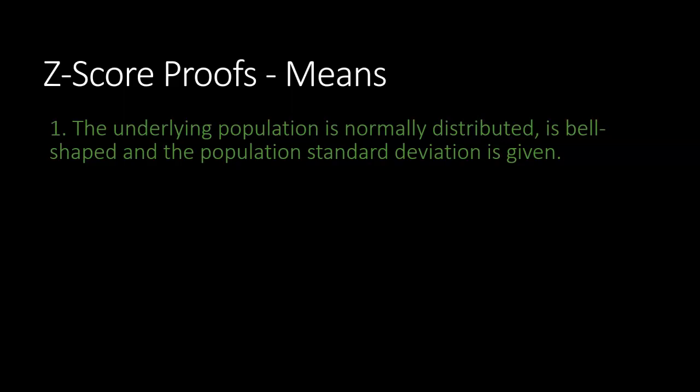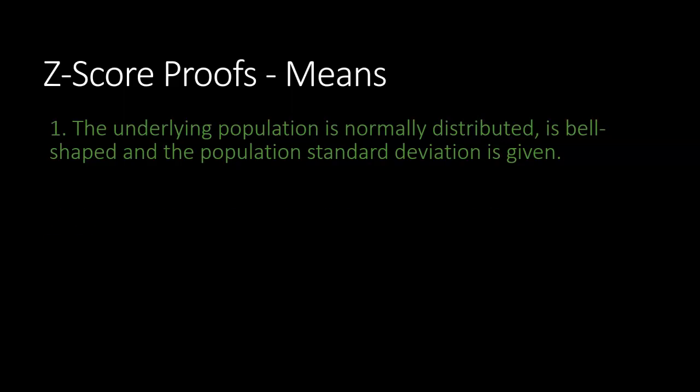But let's say we aren't told that the underlying population is normally distributed. Then we need to start thinking about the sample size. If the sample size is greater than or equal to 30, and the population standard deviation is given, then we can use a z-score. If we cannot find all of those pieces for that first proof, then we can move on to number two and see if this one is true.